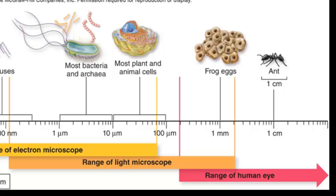And that includes most plant and animal cells, or eukaryotic cells, and most bacteria and archaea cells, which are prokaryotic cells.